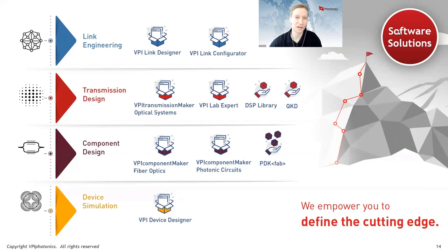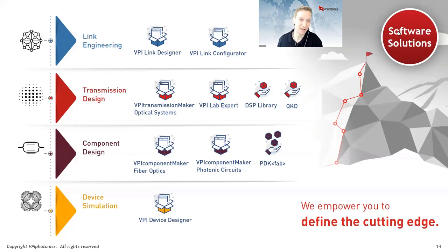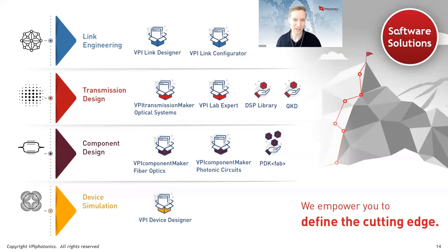For a brief overview of our software solutions, we offer solutions at various levels of abstraction. Starting at the bottom with device simulation — simulating a waveguide or fiber and understanding how light propagates through it or calculating modes. We also have component design software for designing fiber optic amplifiers or photonic integrated circuits. For transmission design at the systems level, we simulate a transceiver — the transmitting optics, fiber nonlinearities, and how the signal is received. Today we're focusing on the highest level of abstraction we cover: link engineering, with software solutions for cost-optimizing network design using VPI Link Designer and VPI Link Configurator.